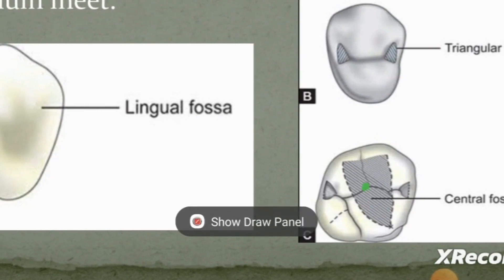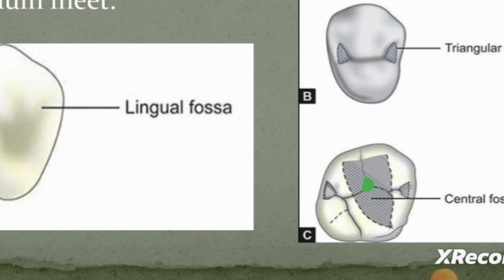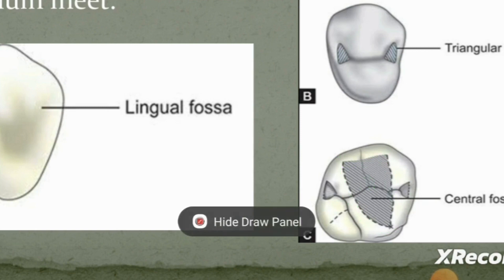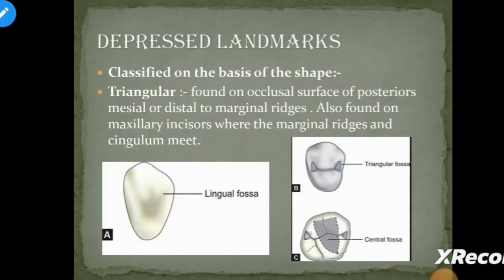On the basis of shape, fossa can be triangular. These are found on the occlusal surfaces of posteriors, either mesial or distal to the major marginal ridges. They are also found on maxillary anteriors where the marginal ridges and cingulum meet.